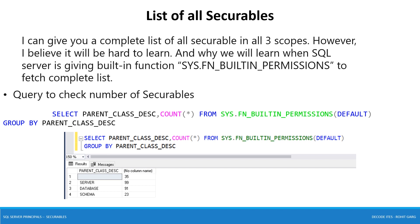Microsoft SQL Server comes with 248 Securables under three scopes: server, database, and schema. I can give you the list but it will not be possible for you to memorize it. That's why Microsoft SQL Server gives you a built-in function to fetch a list and refer to it as and when required. You can use sys.fn_builtin_permissions to fetch the complete list of your SQL Server instance. You can use this query — SELECT parent_class_desc, COUNT(*) FROM sys.fn_builtin_permissions — to check the number of Securables under each scope.